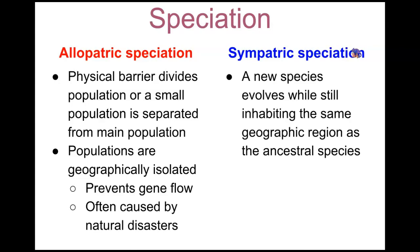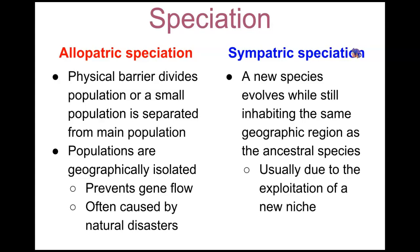Sympatric speciation, on the other hand, is when a new species evolves while still inhabiting the same geographic region as the ancestral species. This usually takes place due to the exploitation of a new niche — a new type of behavior or role that the particular organism might play within that same geographic region or habitat.